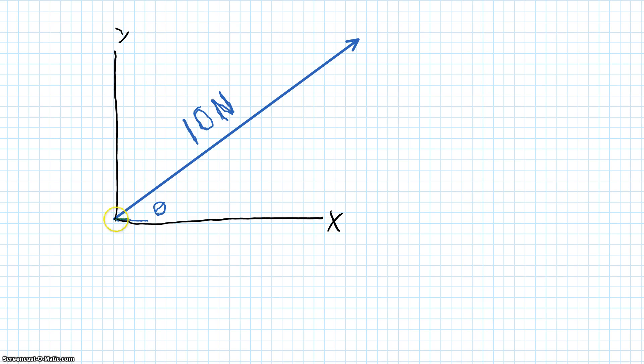What this would look like would be drawing a vector straight along the x axis and a second vector straight along the y axis such that we make a box or a parallelogram with our force vector.